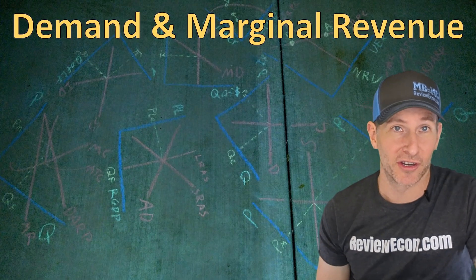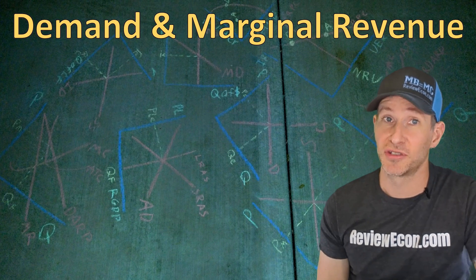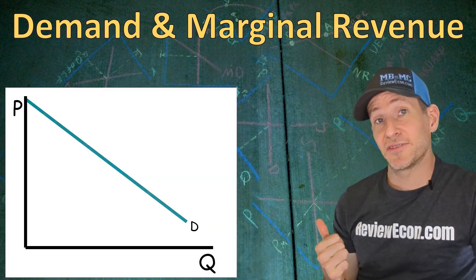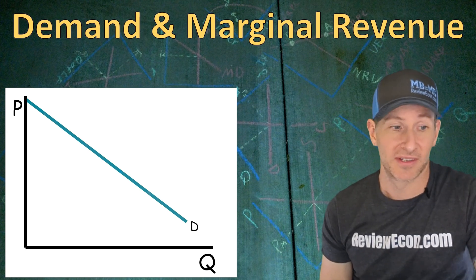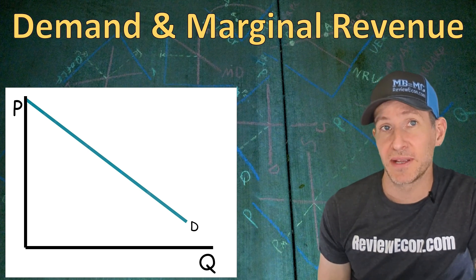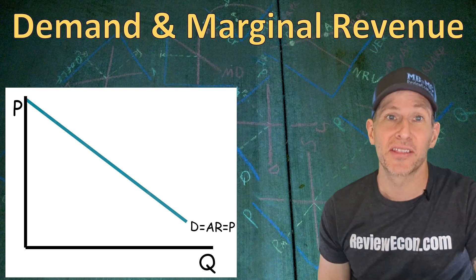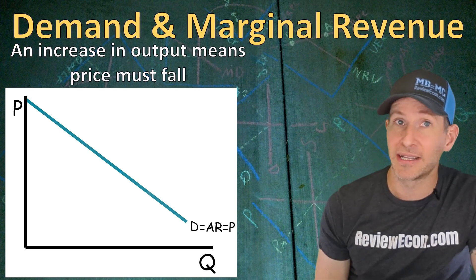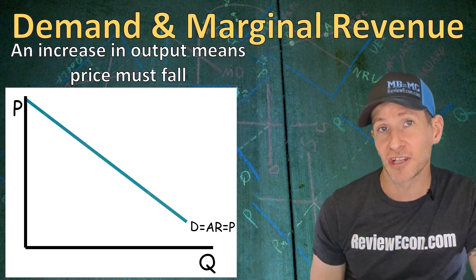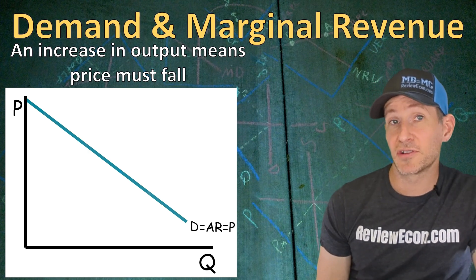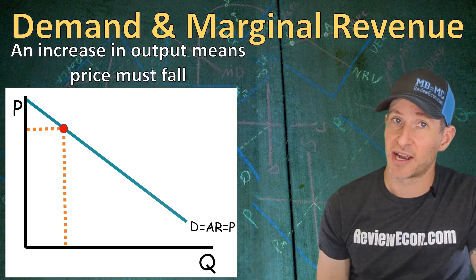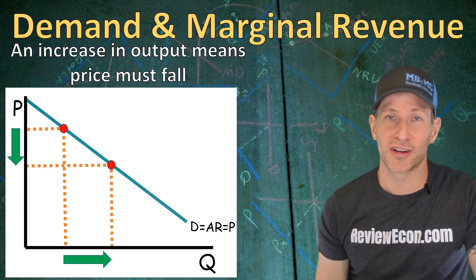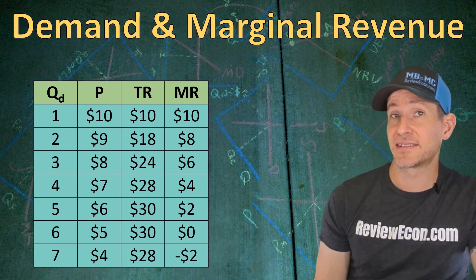Next we're going to talk about the demand curve for a monopoly and its relationship to the marginal revenue curve. Since the market is the firm and the firm is the market, the monopoly firm is going to see the entire market demand curve. That market demand curve is also going to be the average revenue and the price for the firm. Since that firm demand curve is downward sloping, as a monopoly increases output it must lower the price on the units it sells. So if they produce low quantities of output they can charge a higher price, but at higher quantities of output the price must fall.